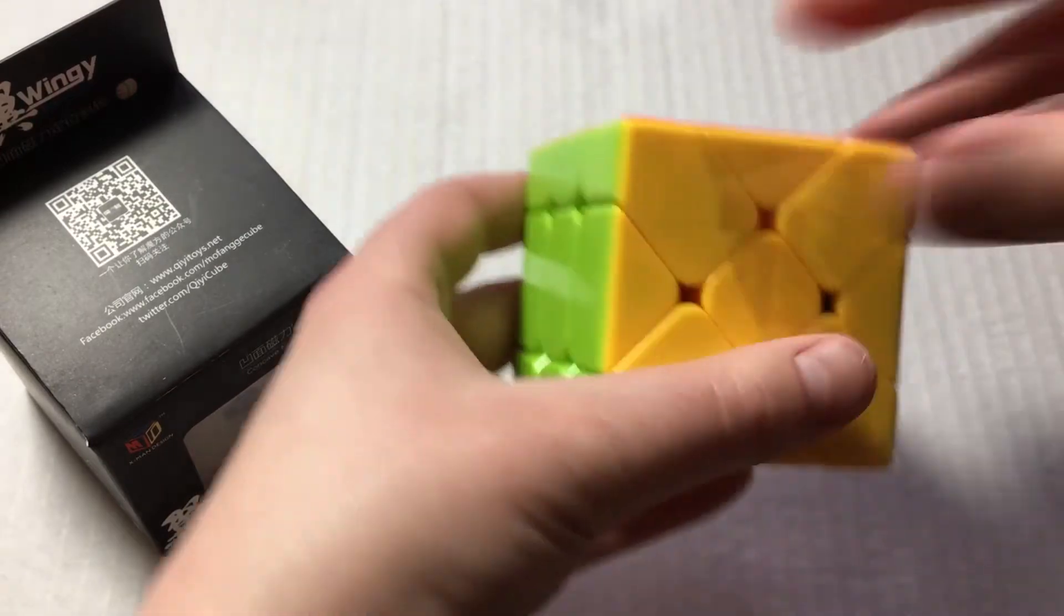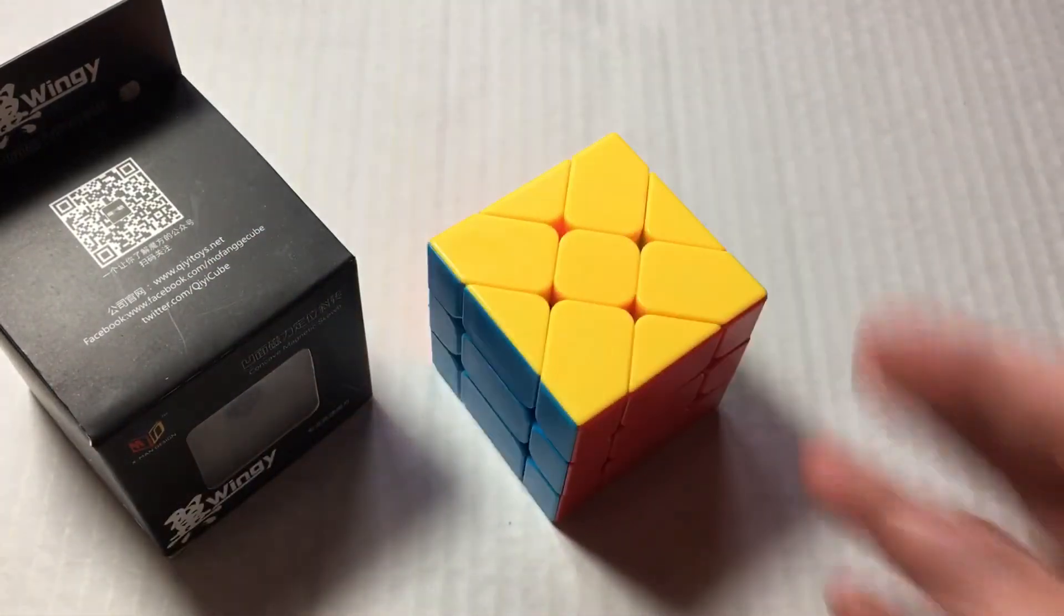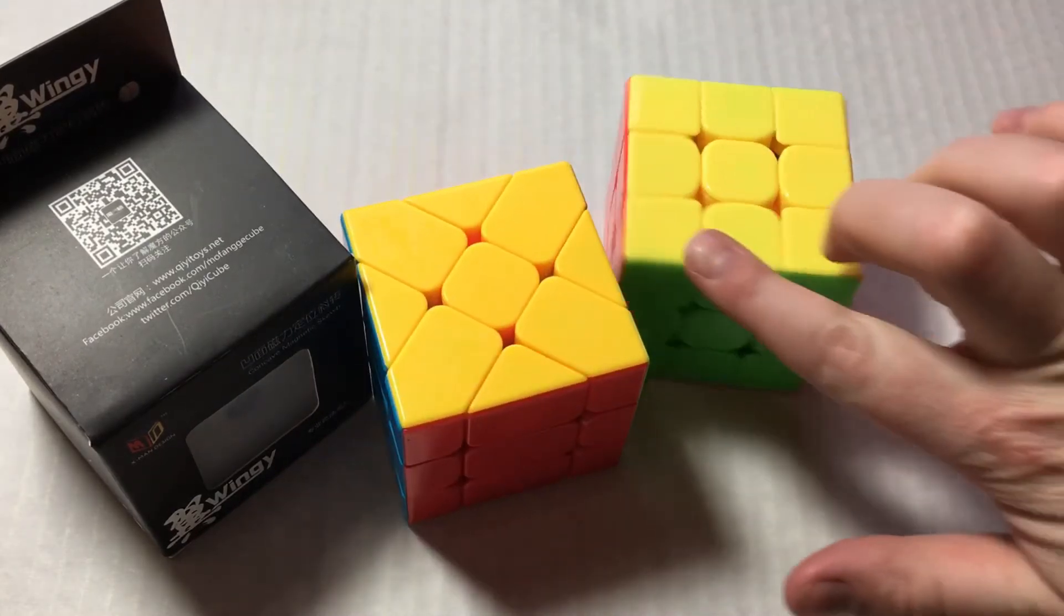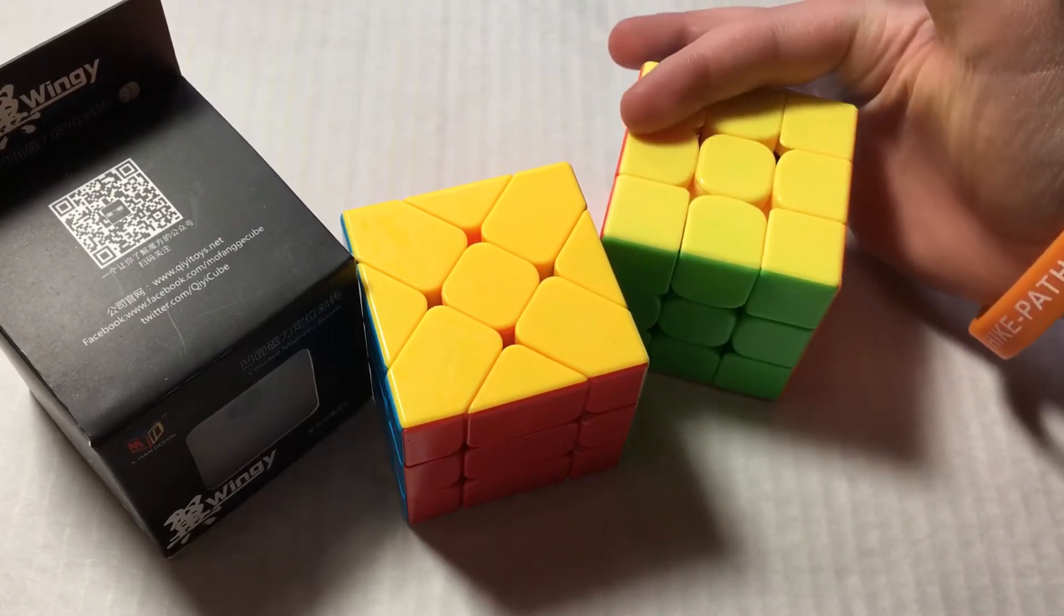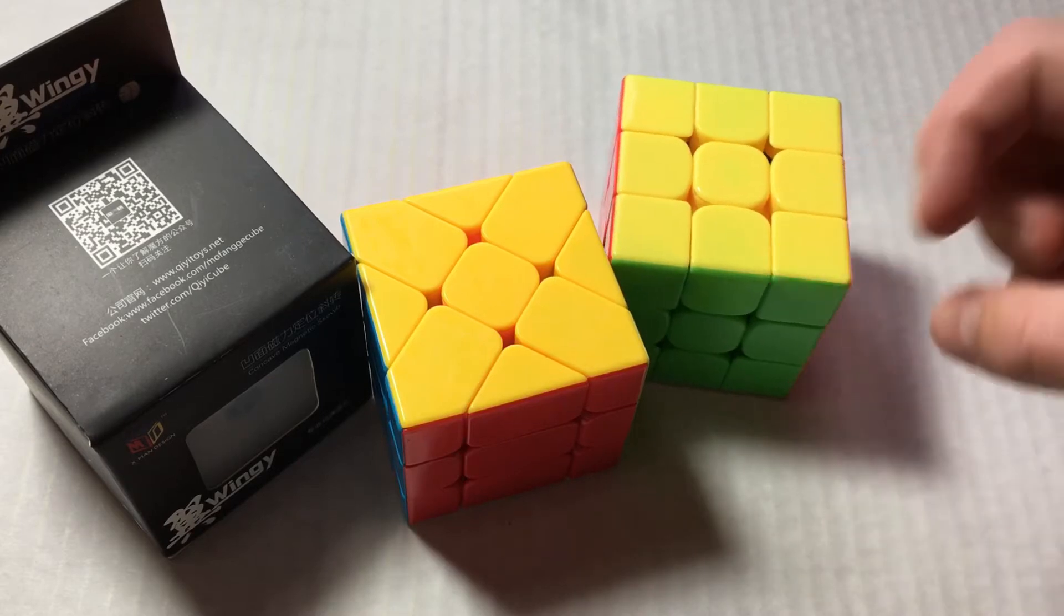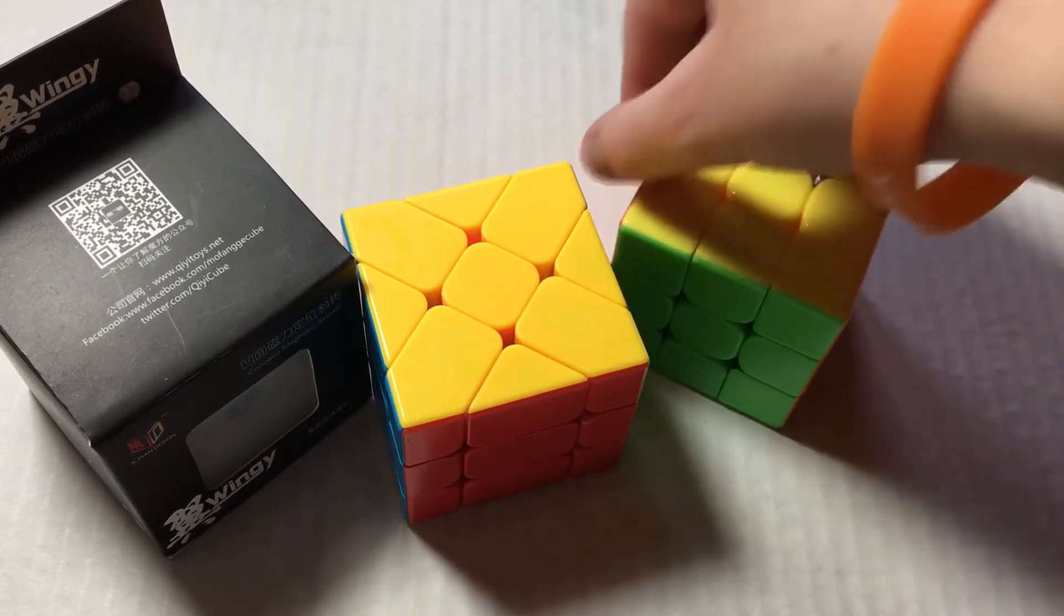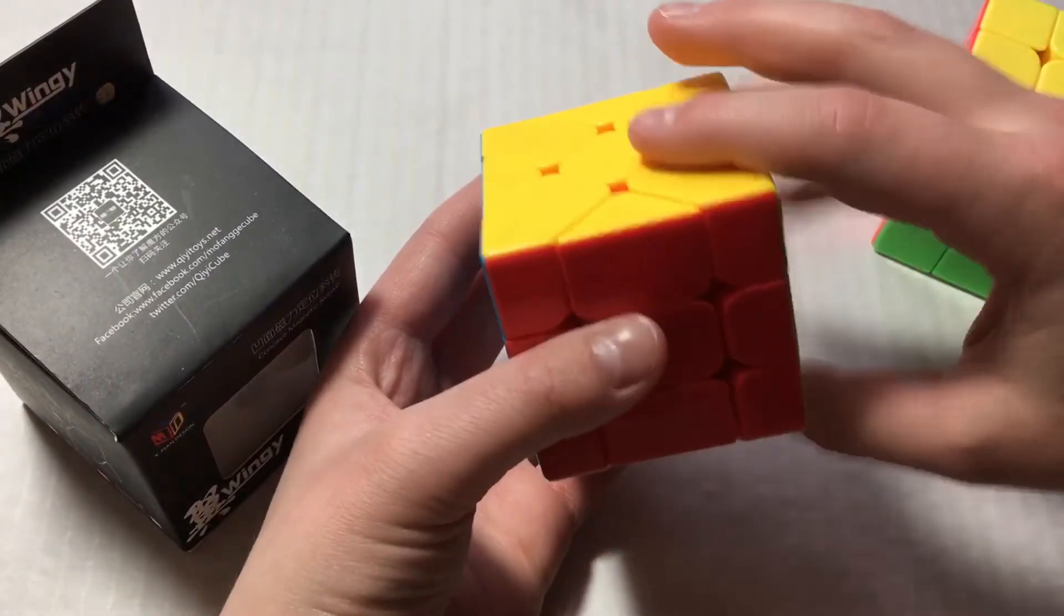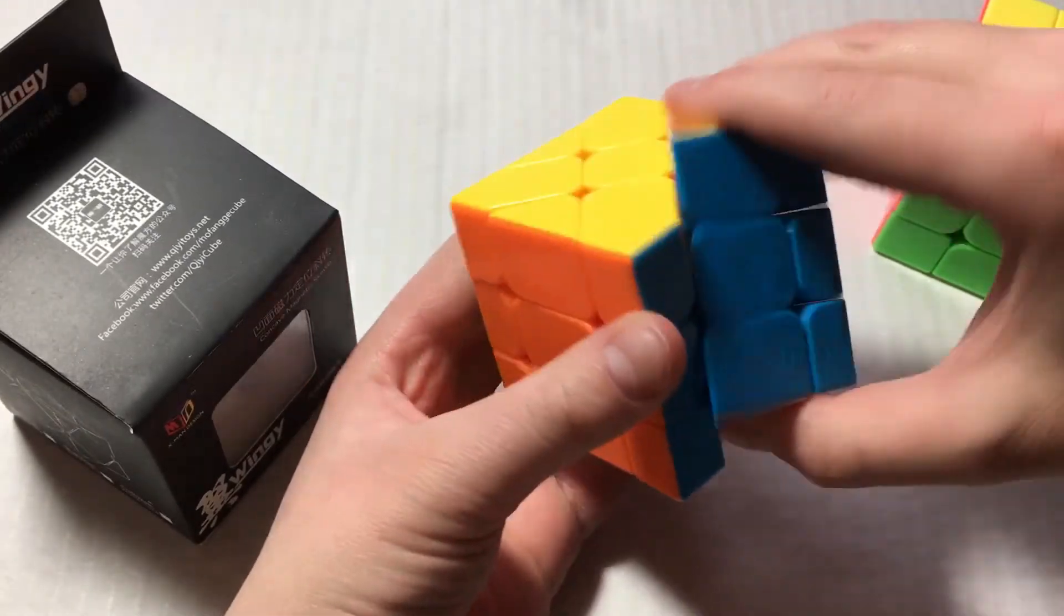So here we are. If you guys do not know what a Fisher cube is, it is basically a 3x3 but you would slice off right along here, here, here, and here. Then you would take this corner piece that you just cut off and put it on this edge, and it gives it this look. So it actually turns like this, not how a normal 3x3 would.